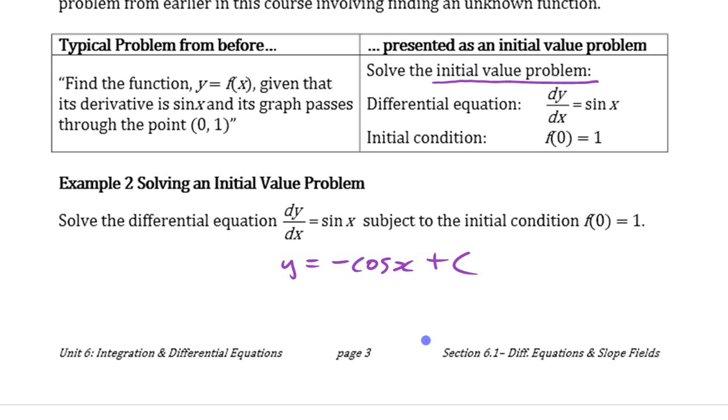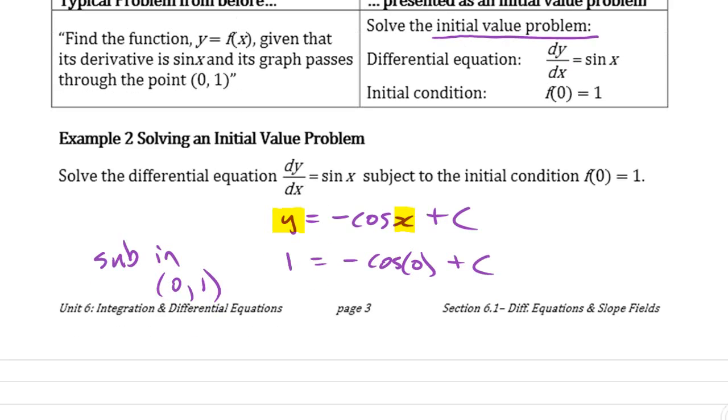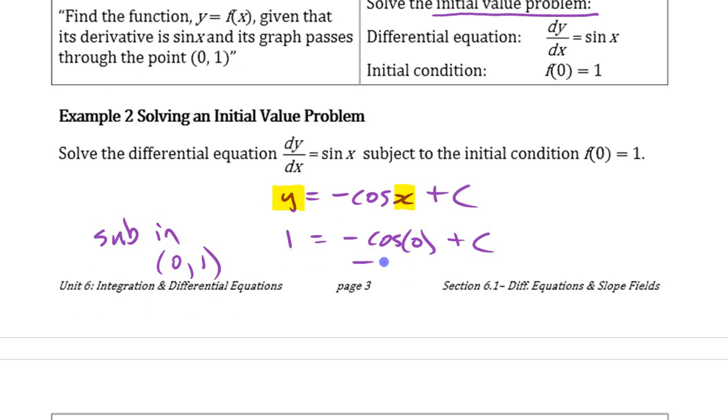So this is the solution if it just said solve that differential equation. But if you know that f of 0 is 1, you can use that to figure out what c is. So we could sub in this point, 0, 1. If you replace each of those things and you make it 1 here, negative cos of 0. What's cos of 0? Cos of 0 is 1, so we got negative 1 plus this equals 1. So we got c equals 2.